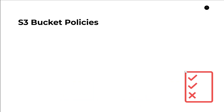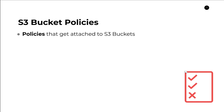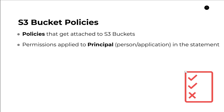So let's move on and talk about S3 bucket policies and how they are used. S3 bucket policies are a little bit different because they are similar in that there are policies, but they get attached to the resources, which are the S3 buckets and objects in this case. The thing that makes bucket policies a little bit different, besides the fact that they're attached to the asset or resource, is that the permissions get applied to a principal — and the principal in AWS lingo is just a person or an application that is specified in the statement.